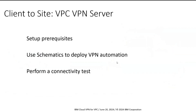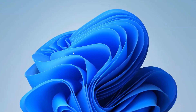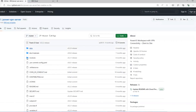This demo will have three stages. The first will be where we set up the prerequisites. The next will be using Schematics to deploy the VPN automation. And the third will perform a connectivity test to ensure that it is working. The prerequisites consist of creating a Secrets Manager that stores the VPN server certificate and a Cloud Object Storage instance that stores the VPN client configuration. Both the certificate and the configuration are created by the automation for you.